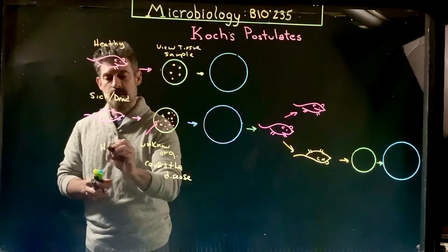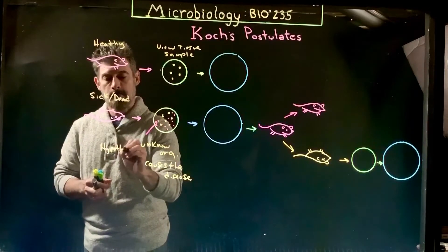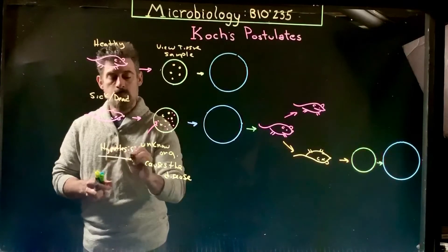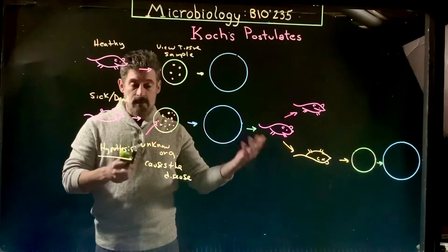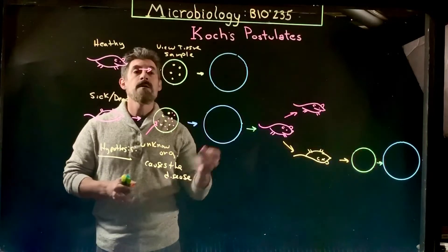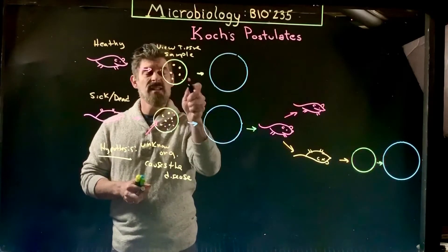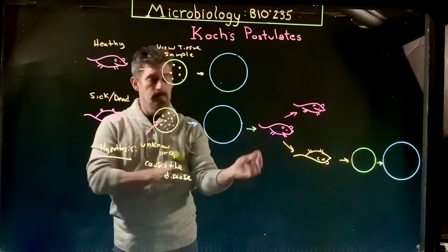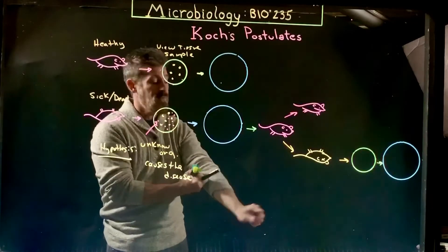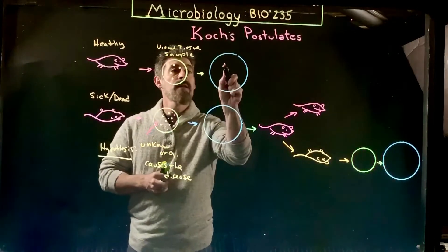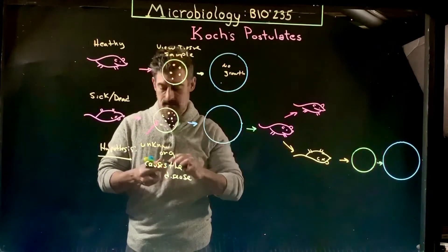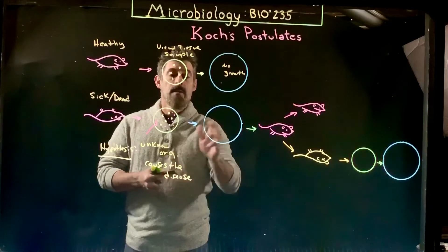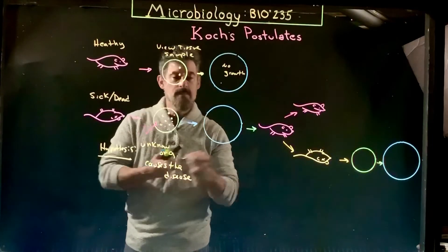And this is just a hypothesis we're testing. We don't know if that's true or not. So that's kind of what the postulates are really about. We then try to take this sample, put it onto a plate and see what grows there. We find that there's no growth of anything unexpected, but for this one here we have some organism that grows.